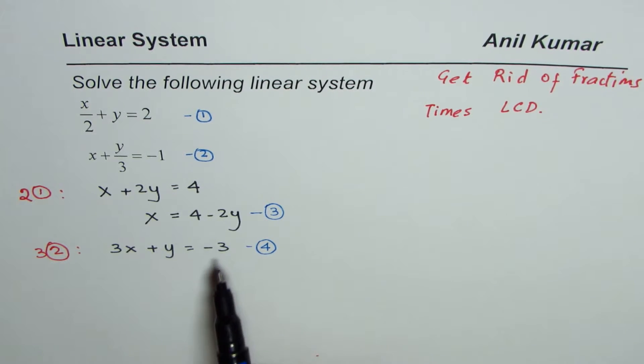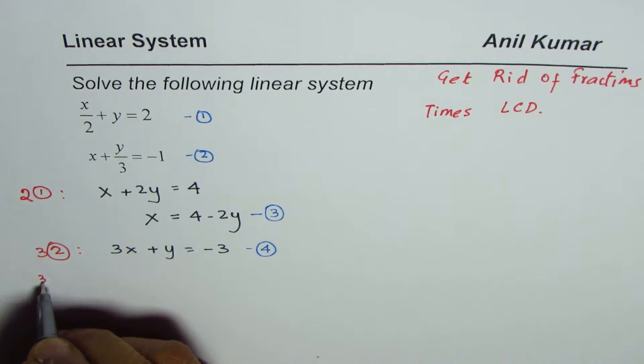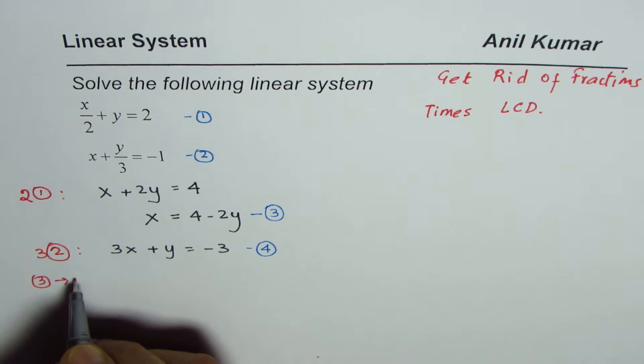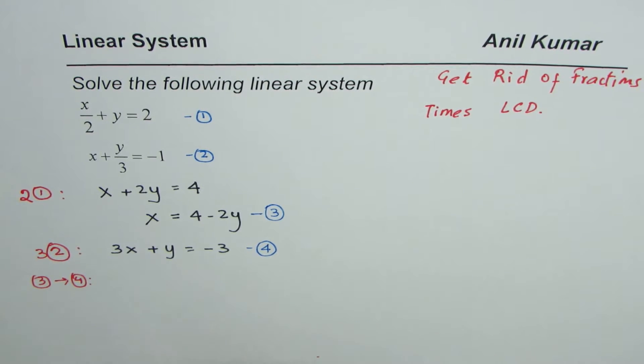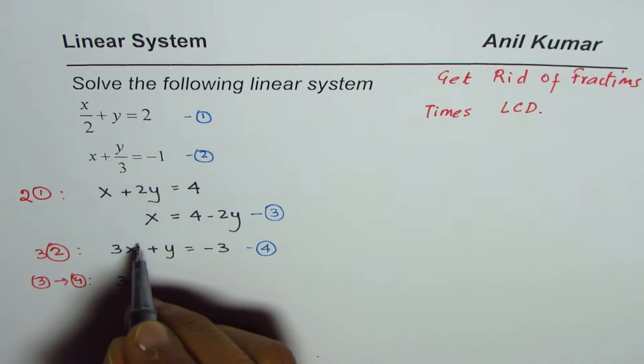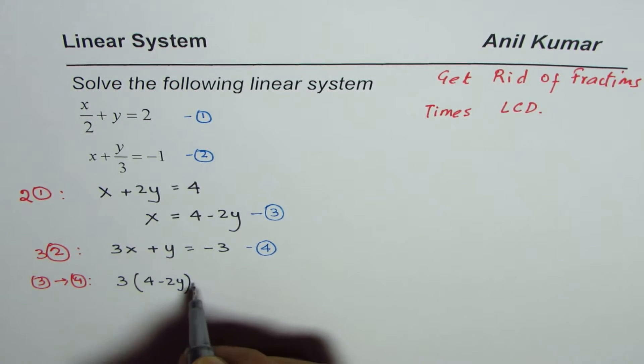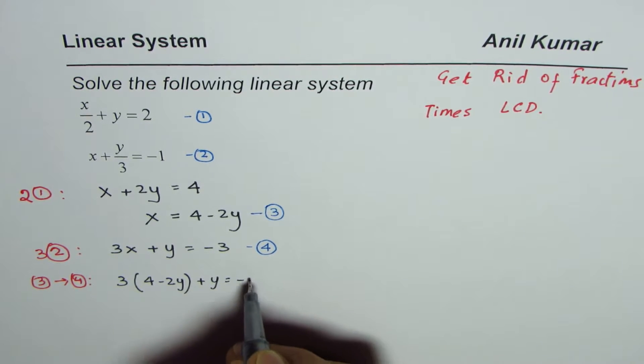Now we can solve this linear system by substitution. We'll substitute the value of x from equation three in equation four. So that means three times, instead of x we'll write 4 minus 2y, and then we have plus y equals minus 3.